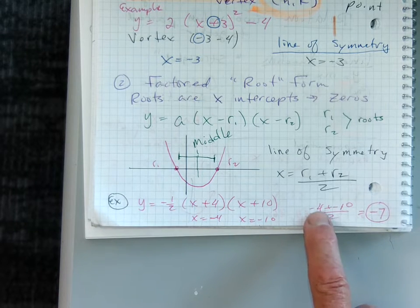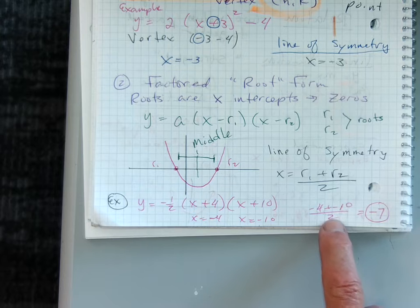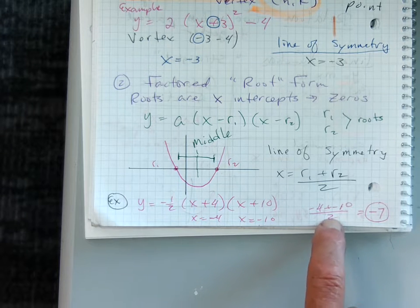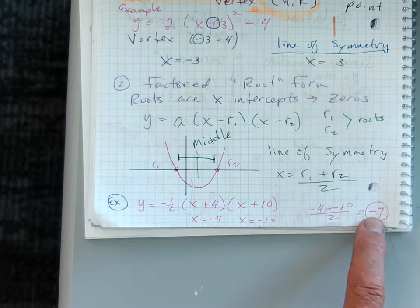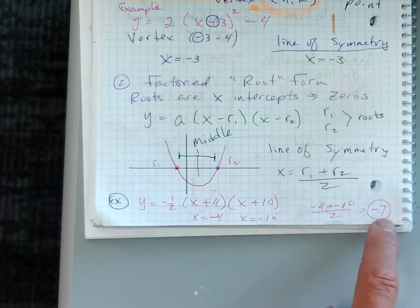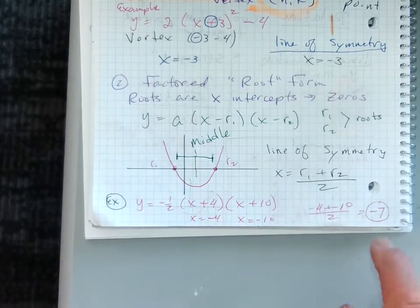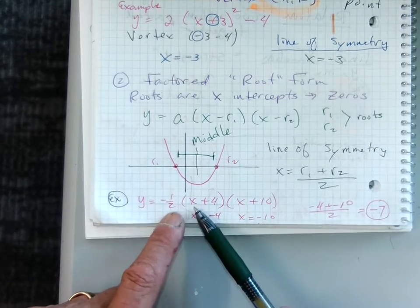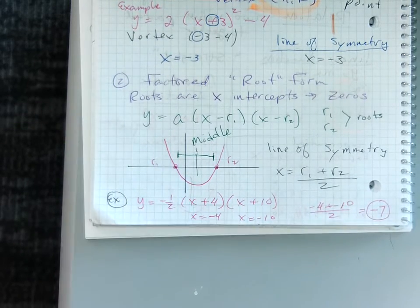And then what we do to get the line of symmetry is just average them. I've got negative four plus negative ten, which is negative fourteen, divided by two is negative seven. So the line of symmetry would be at negative seven. That puts it right in between these numbers. If we wanted the y value, I would take this negative seven and plug it in to get the y value. Not asking that for yet.